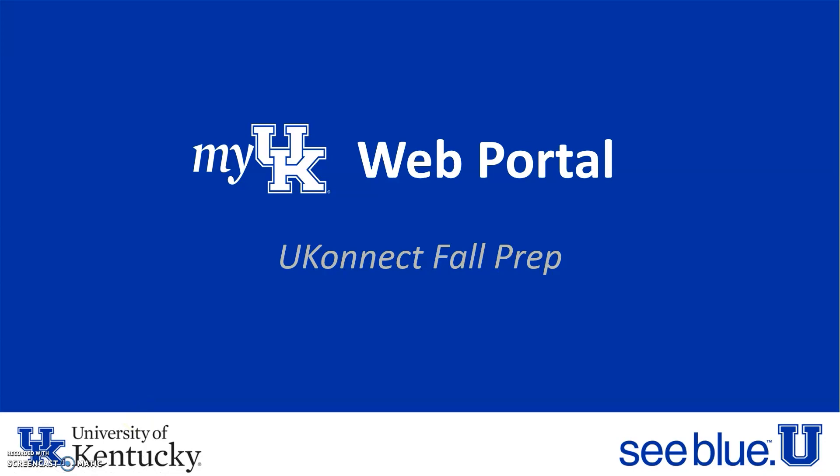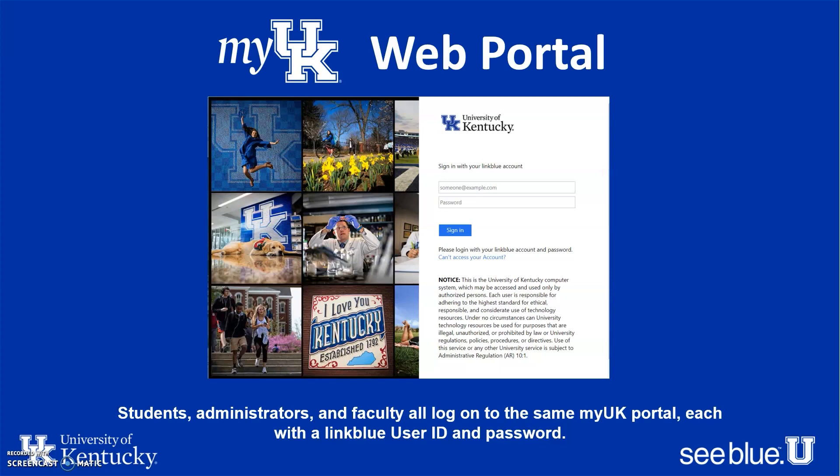We're going to walk you through the My UK web portal as we get you ready to schedule your fall classes. You're going to go to myuk.uky.edu and then a login box will appear — you'll want to log in with your LinkBlue account and password. Aside from scheduling courses and degree planning, your My UK portal also offers access to schedule appointments through University Health Services, view all your financial aid and scholarships, pay tuition, and look at your academic record.